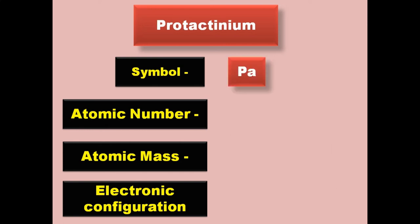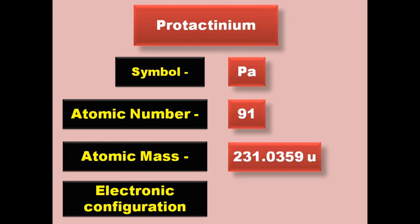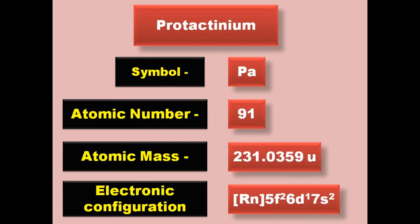Protactinium has symbol Pa, atomic number 91, atomic mass 231.0359, electronic configuration [Rn] 5f2 6d1 7s2. Protactinium is an actinide and exists in solid form at room temperature.